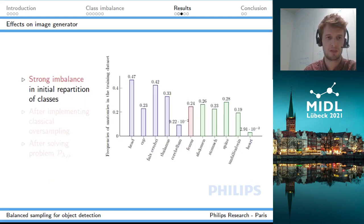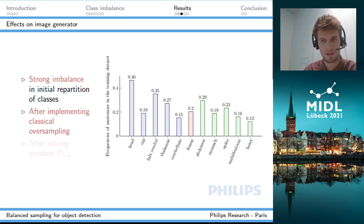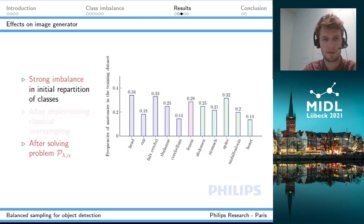This is the original distribution in the training dataset. If I implement classical oversampling and duplicate the images of the minority classes - cerebellum and heart in this case - I'll get something more balanced, but you can see there's still a big bias towards the head because we also duplicated images of the head when we duplicated the cerebellum, and it's also maybe biased towards the abdomen. This is not really satisfactory. When we solve the problem P of lambda and alpha, we get something much more balanced in terms of frequency. The distribution seems much more balanced, which is good. But we don't only want something balanced - what's interesting in the end is how it affects the network performance.